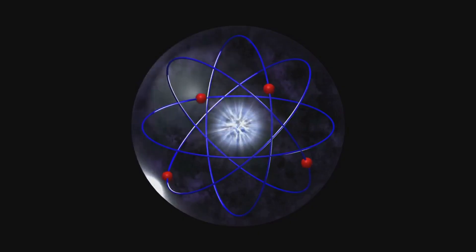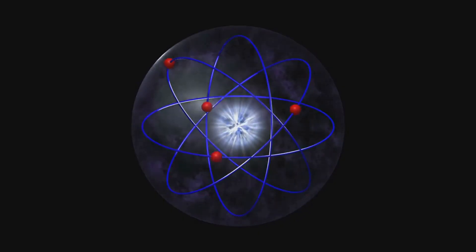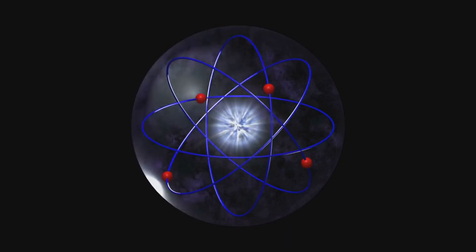Protons give an atom its elemental identity, neutrons contribute to its mass, and electrons, in their constant whirl around the nucleus, play a vital role in chemical reactions and bond formation.